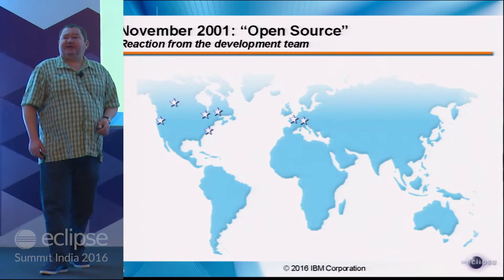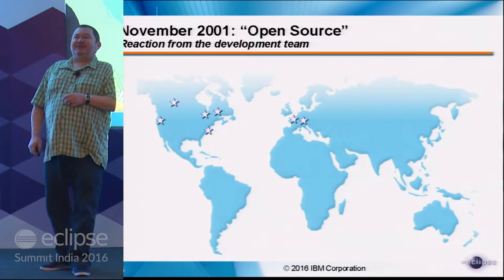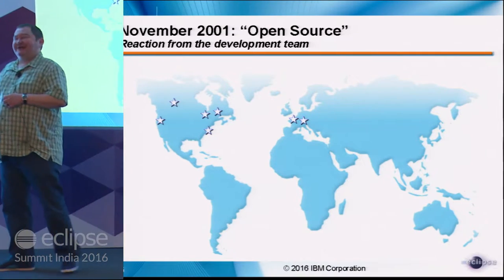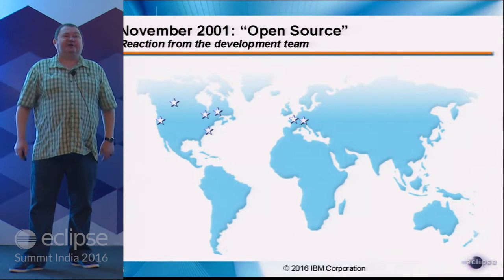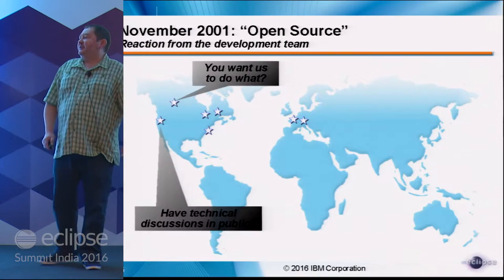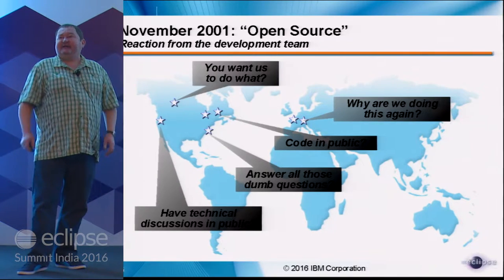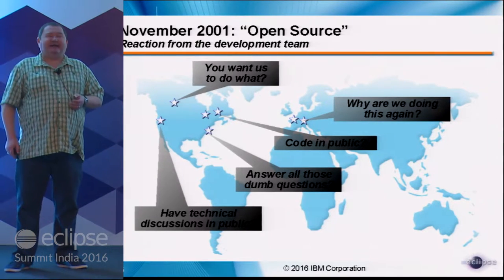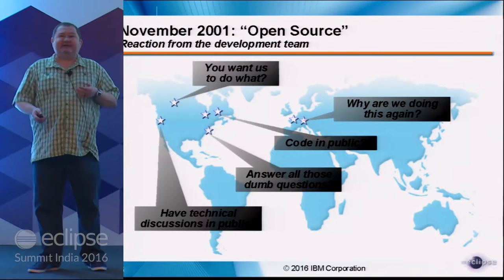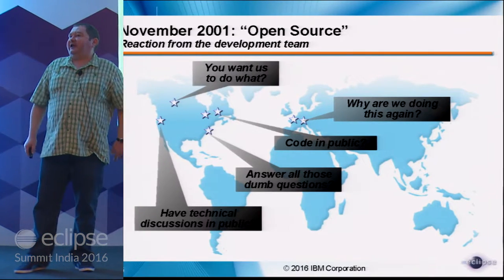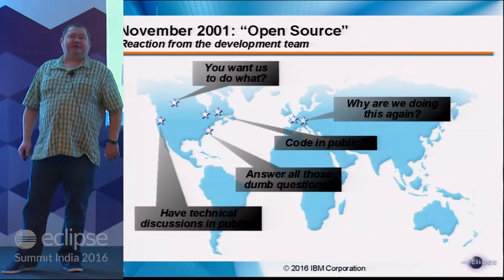Back in 2001, not many people or companies were doing open source. The reaction of our team ranged from hesitation to outright refusal — people didn't want to do it. There was also fear that future employers would see their code or their comments. It took quite a long time until everyone felt comfortable doing open source and interacting with people outside the team.